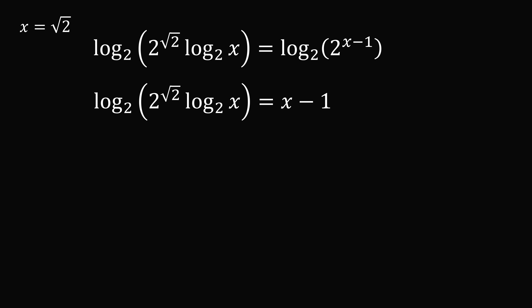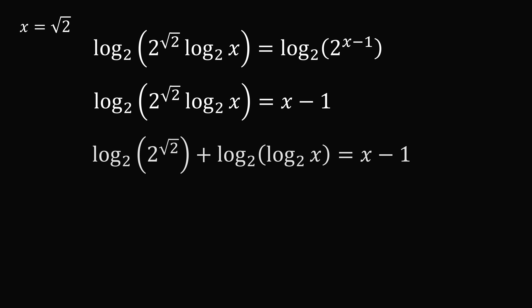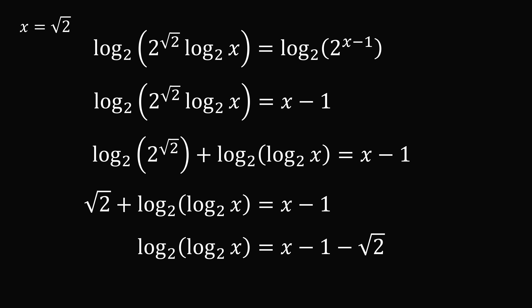The logarithm of a product is the sum of the logarithms, so this equals log base 2 of 2 to the power of root 2 plus log base 2 of log base 2 of x. Now, log base 2 of 2 to the power of square root of 2 simplifies to square root of 2. So we have square root of 2 plus log base 2 of log base 2 of x equals x minus 1. Subtracting square root of 2 from both sides: log base 2 of log base 2 of x equals x minus 1 minus root 2.